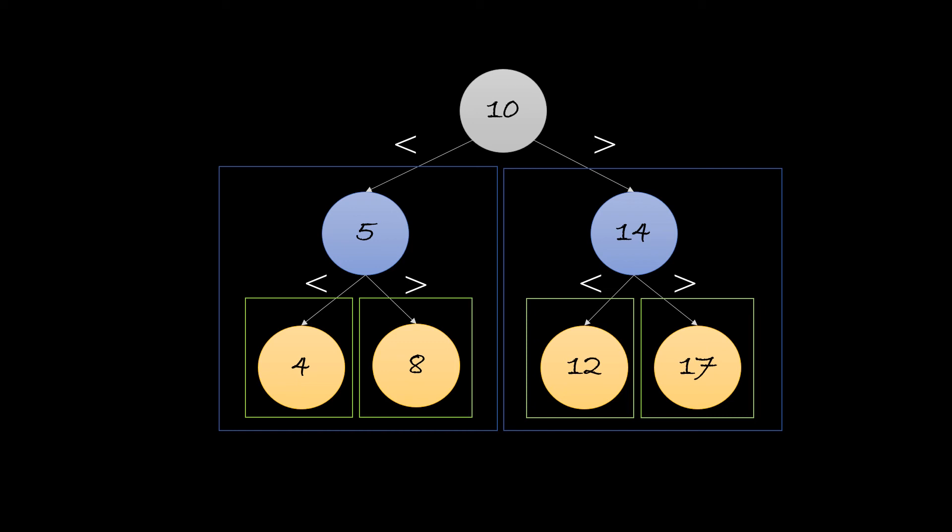Taking 10 as the pivot, if we were to search 12, we know it is greater than 10 so we discard the left half and search in the right tree.